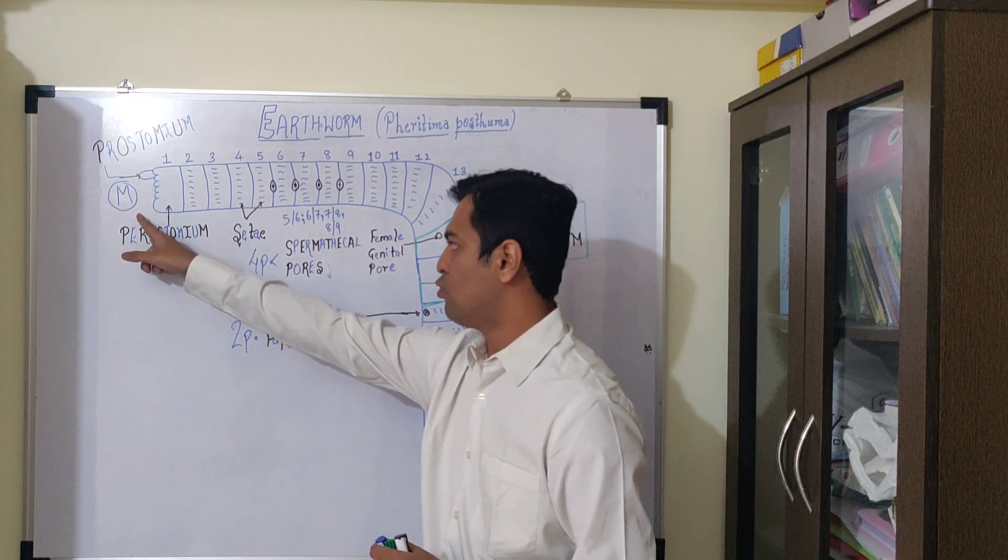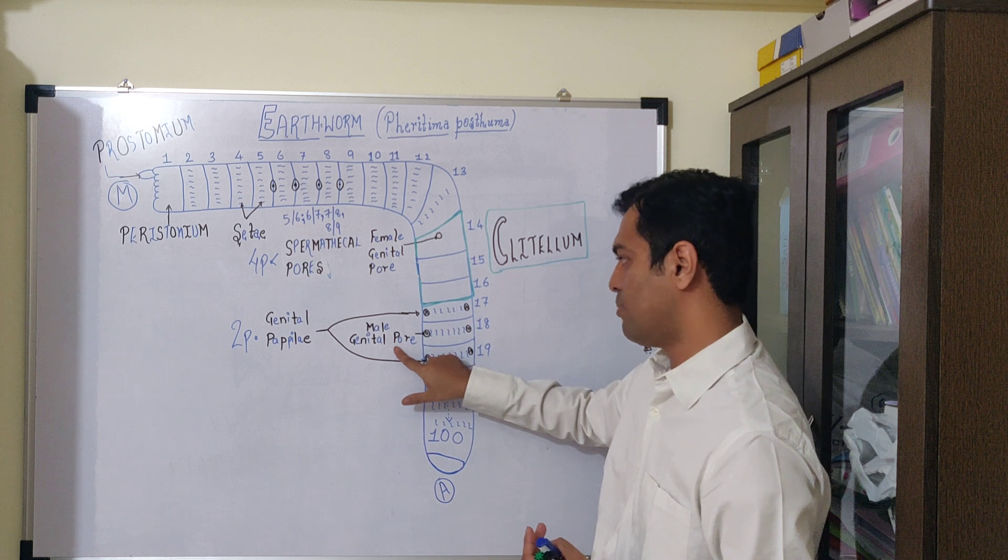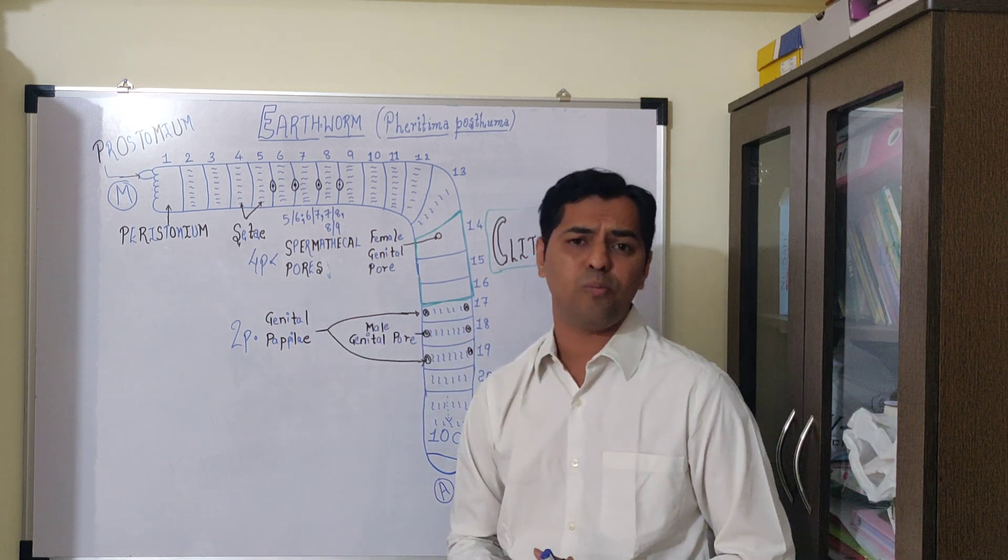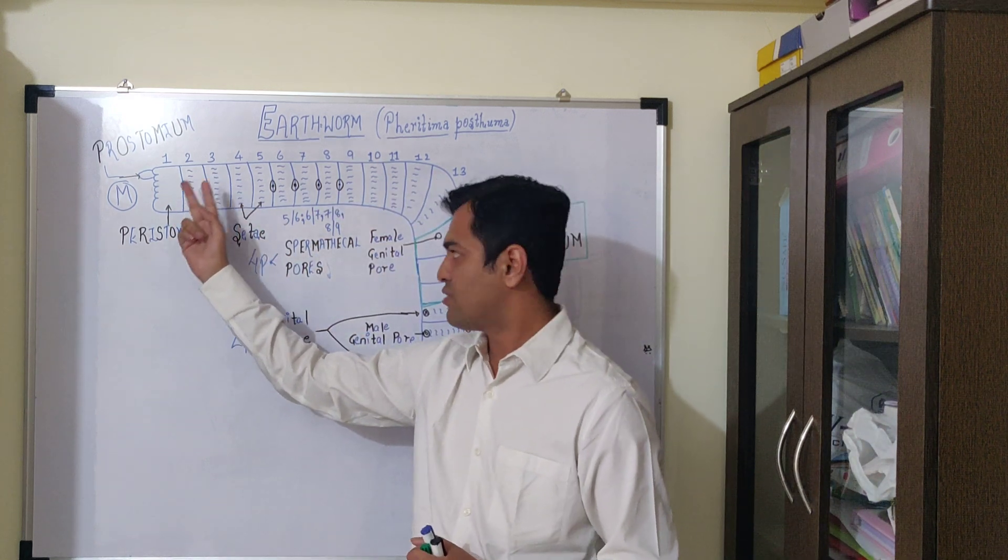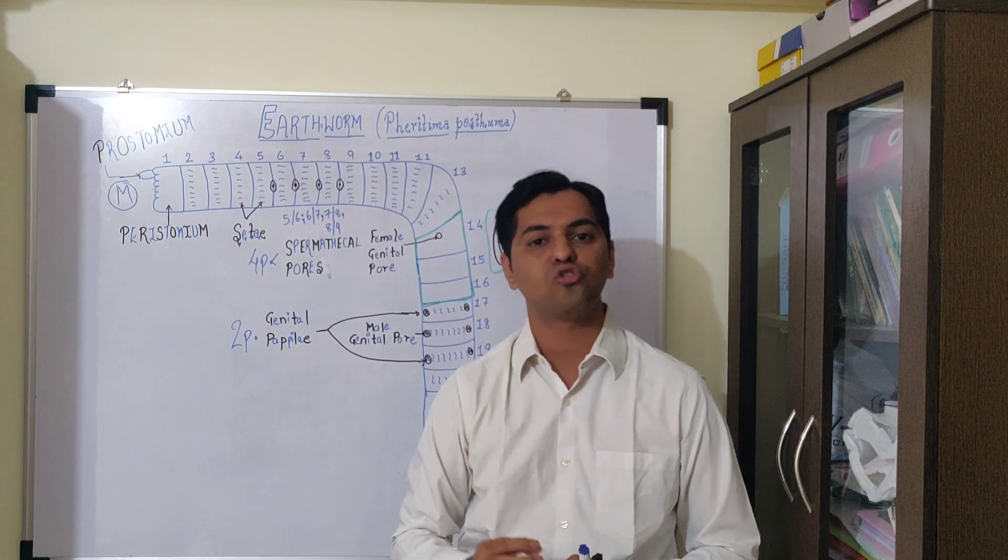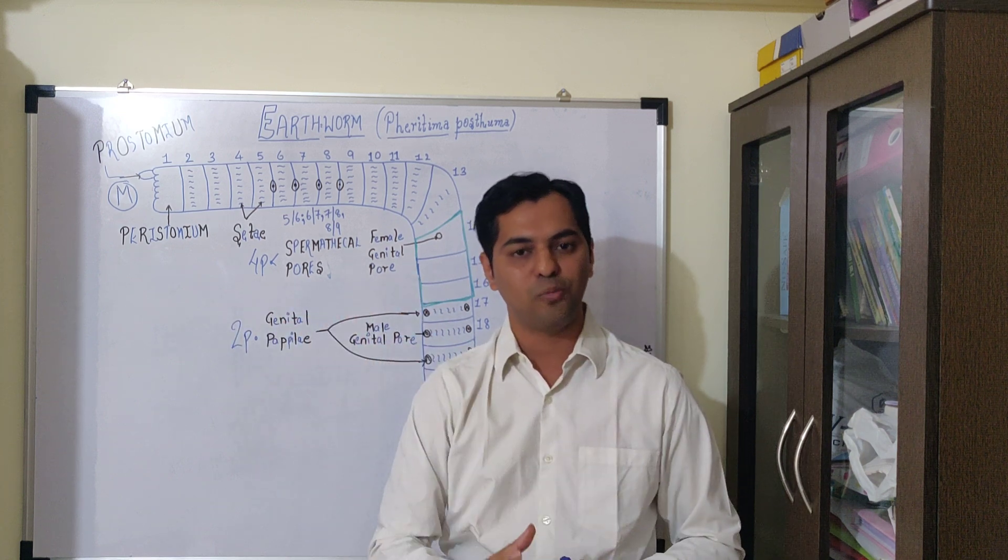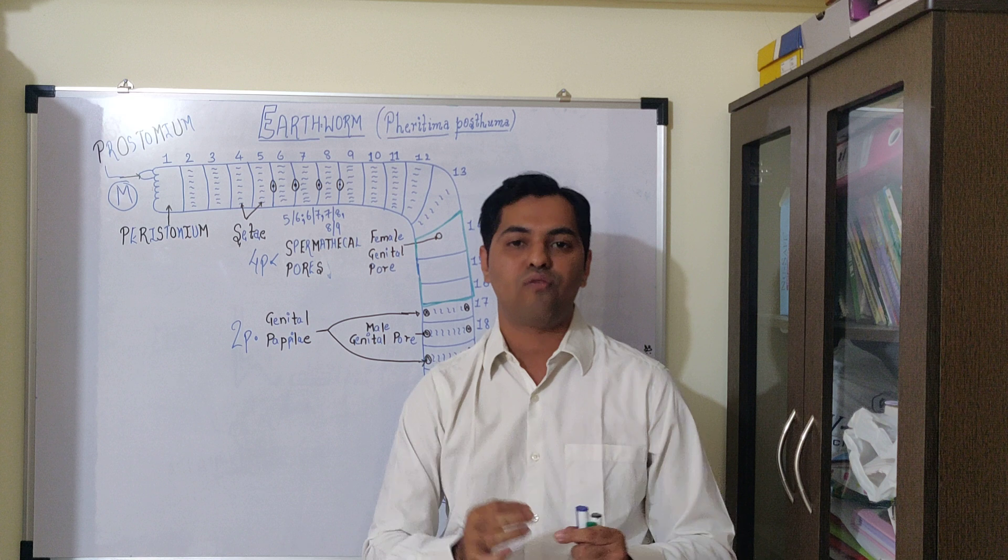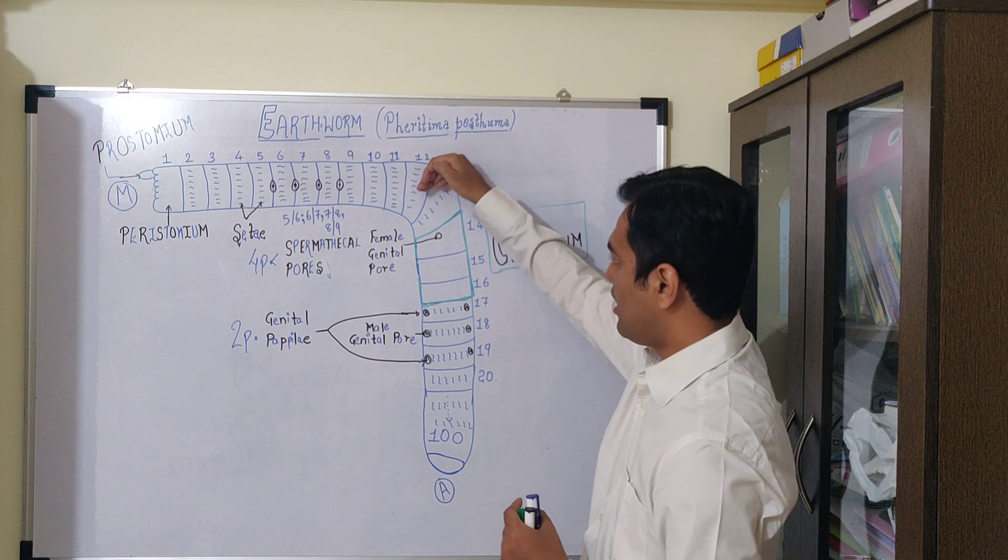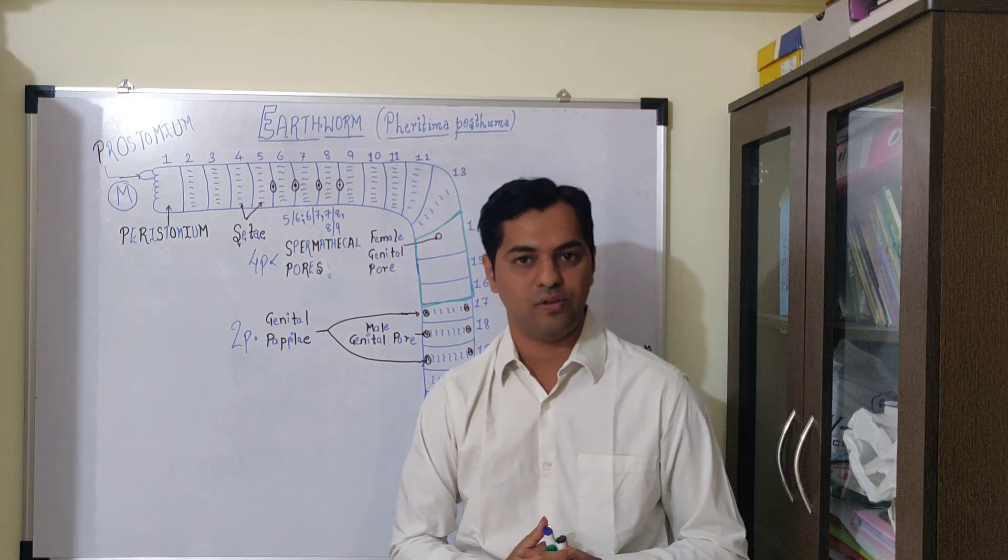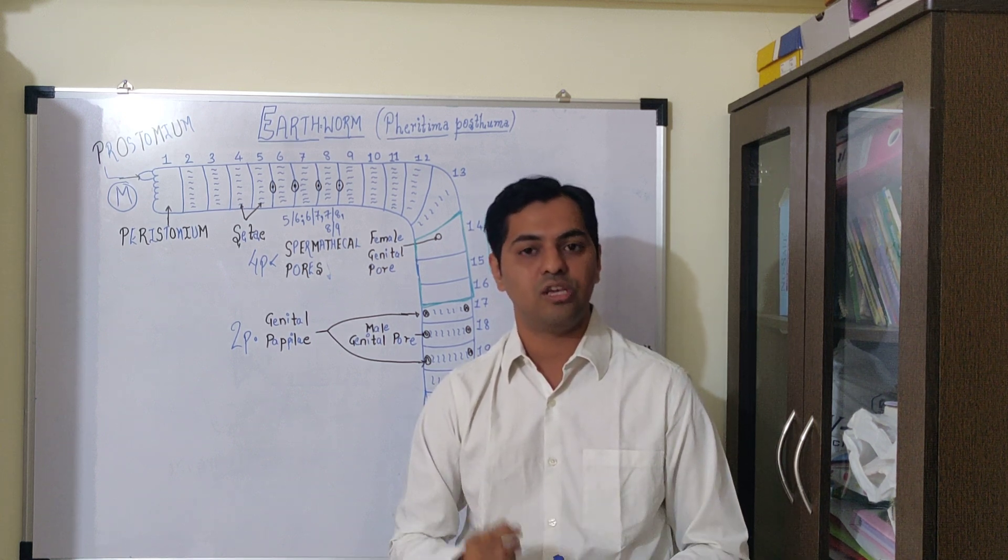Major cavities discussed are mouth, anus, spermathecal pores, female genital pores, male genital pores, and genital papillae. Throughout the body segments except the first two, the entire body contains pores known as nephridiopores. These function in excretion of nitrogenous waste products. After the 12th segment on the dorsal surface are dorsal pores, which discharge coelomic fluid.